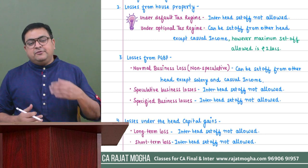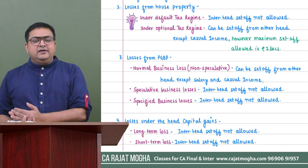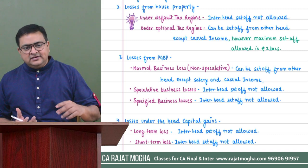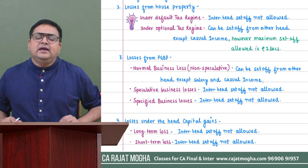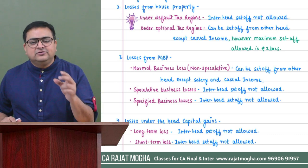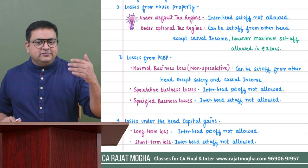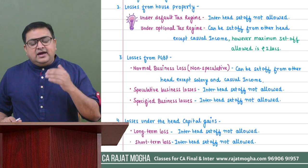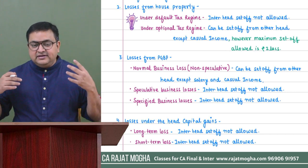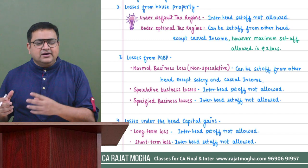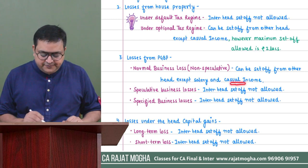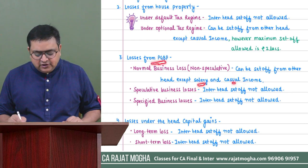Regarding PGBP losses in inter-head set-off: PGBP losses can be set off from any other head except salary. We cannot set off PGBP losses from salary income. Second, PGBP losses cannot be set off from casual income — such as winnings from lottery, crossword puzzle, etc. No losses can be set off against casual income.